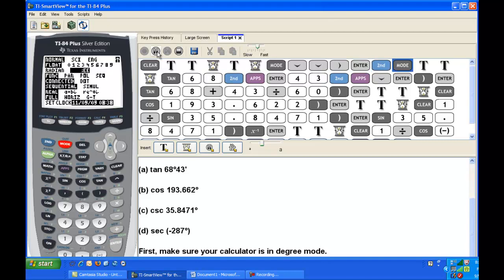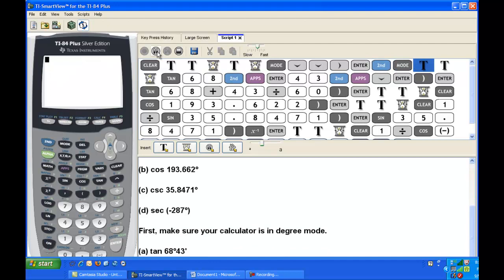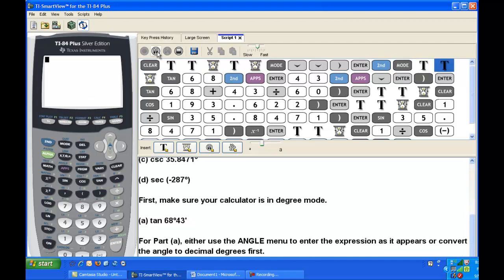If you press second, quit, you'll go back to the home screen. Okay, so we're ready to calculate the tangent of 68 degrees 43 minutes. You can either use the angle menu to enter the expression exactly as it appears, or you can convert the angle to decimal degrees first.